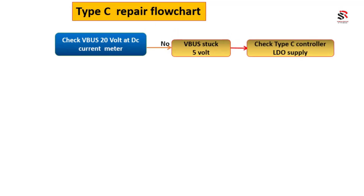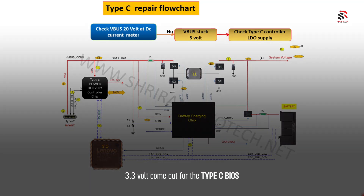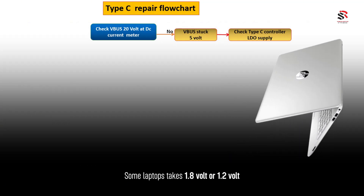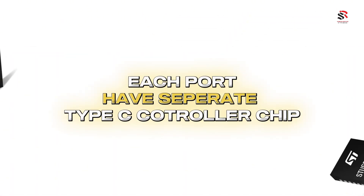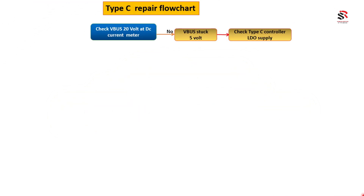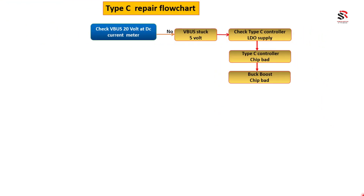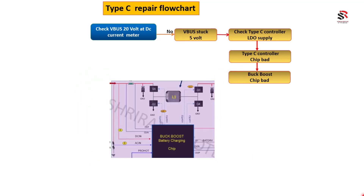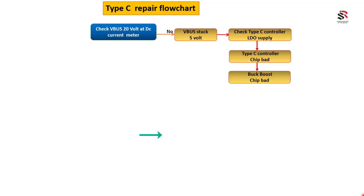If the VBUS voltage is stuck at 5 volts and 20 volts is not coming, first check the Type-C controller supplies — the 5V supply and the LDO voltages such as 3.3V for Type-C bias, 1.8V, and sometimes 1.2V. Check for corrosion or short circuit on the Type-C controller chip, since each port has its own separate controller. Check the CC line, VBUS resistance, and if the Type-C controller is okay, then inspect the buck-boost converter chip.